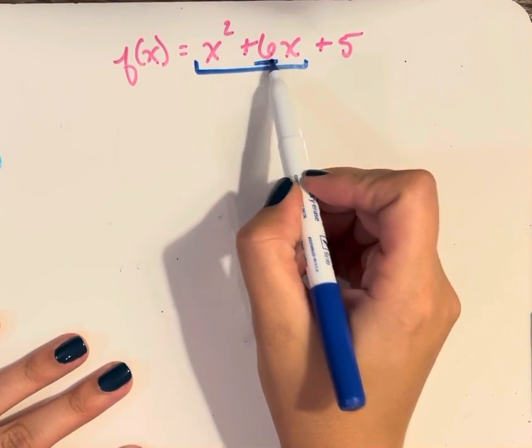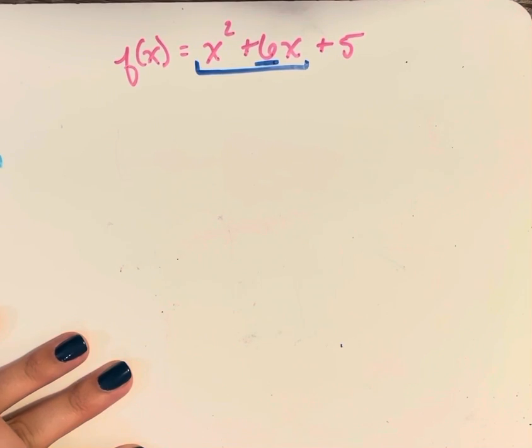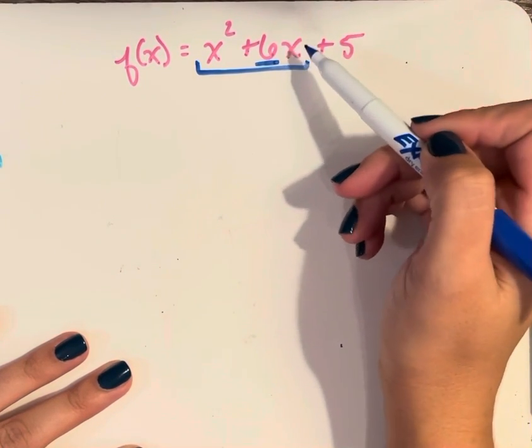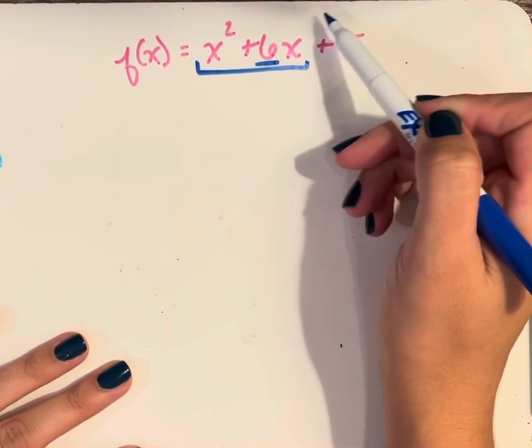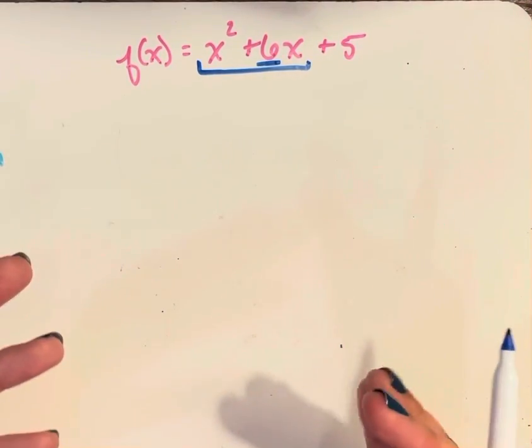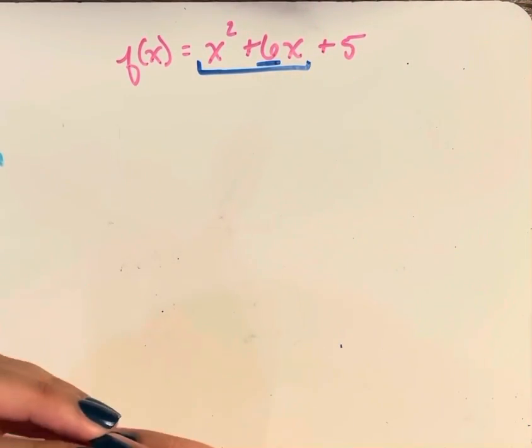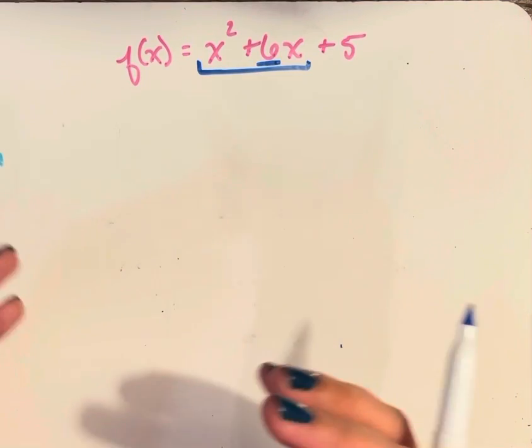I'm going to use the coefficient of x to the first to help me determine what number should I add after this in order to have a perfect square trinomial, which I can factor into the same factor times itself, so that one factor squared.